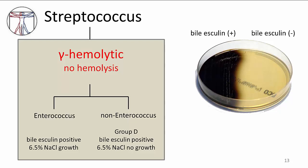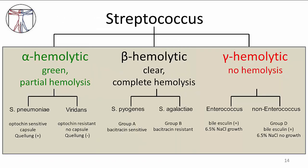To distinguish the two groups, we can inoculate the bacteria into a 6.5% salt media. The group D strep species are less tolerant of higher concentrations of salt and so will not grow. However, Enterococcus will grow well in salt-concentrated media. Here is a summary table, and thank you for your attention.